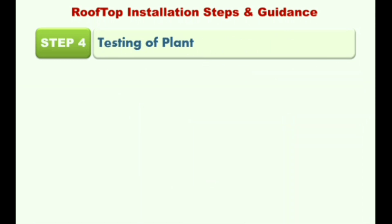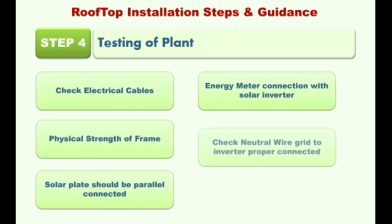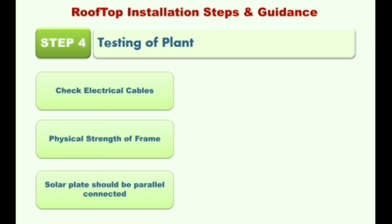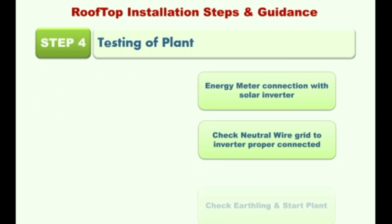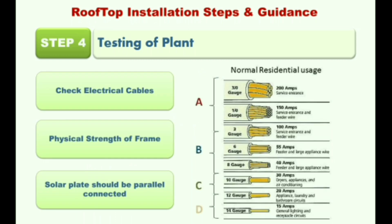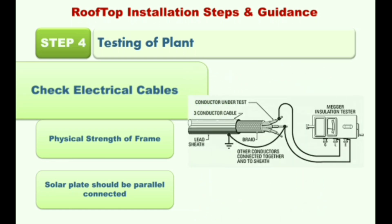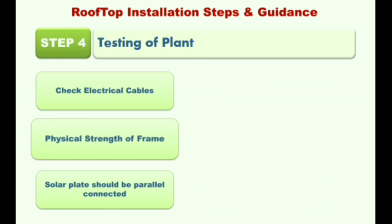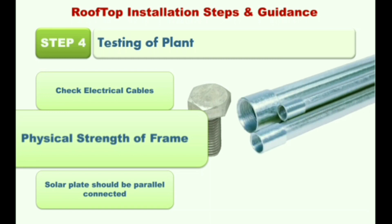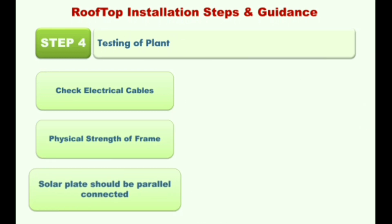The last step is testing of the plant. These are the steps used to test the plant after installation — for three of them you can take help from professionals, and the remaining three you can test by yourself. Check electrical cables using meters to verify connectivity and condition. You can use quality materials for constructing the structure with good strength, and confirm the plant connection is in parallel for maximum power to appliances.